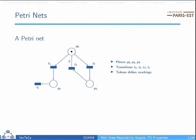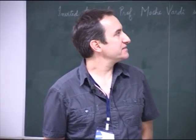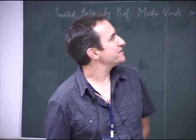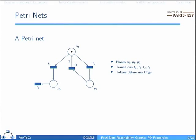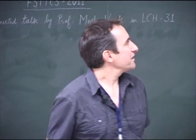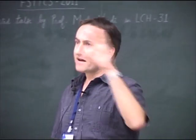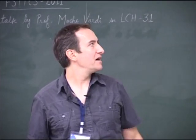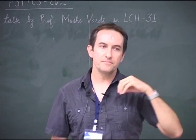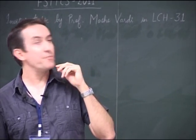A PetriNet is a very classical device in computer science. It's a set of places — here we have P0, P1, and P2. There are transitions: T1, T2, T3, and also TS. And there are tokens on the places. The set of tokens on each place forms a marking.